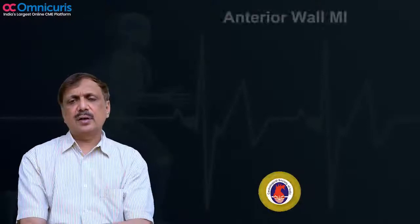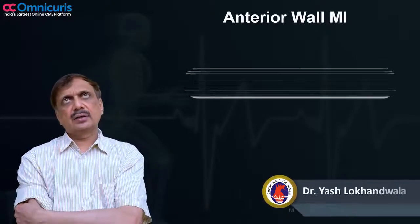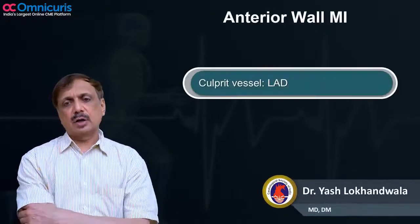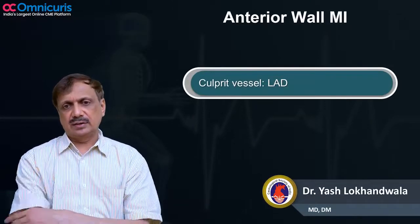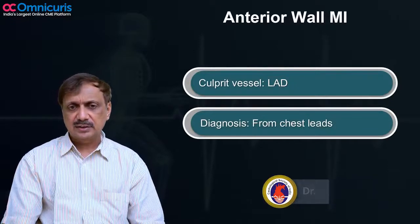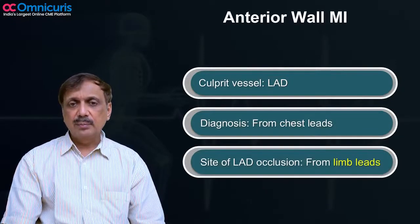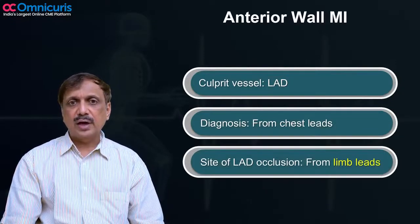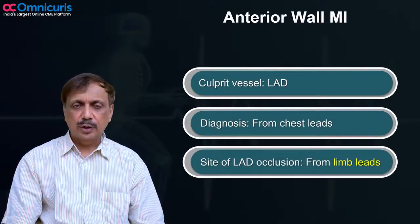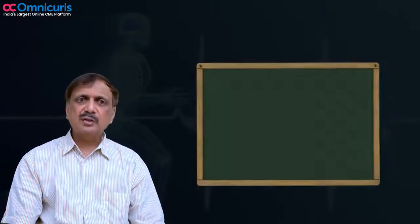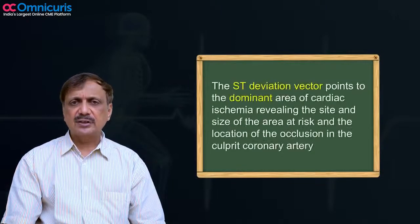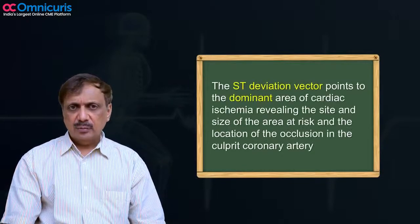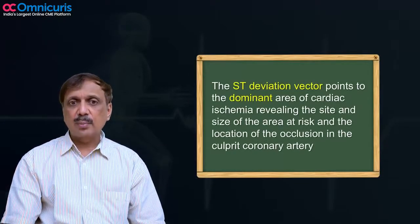For anterior wall MI, the culprit vessel is always the left anterior descending, and this diagnosis is made from the chest leads. But look at the limb leads to find out where the LAD is occluded, based on the principle that the ST elevation vector will point to the dominant area of ischemia.